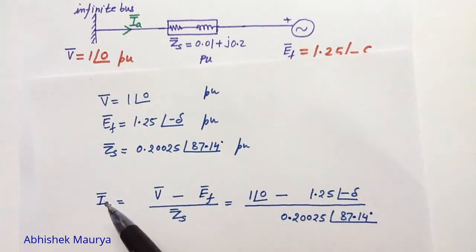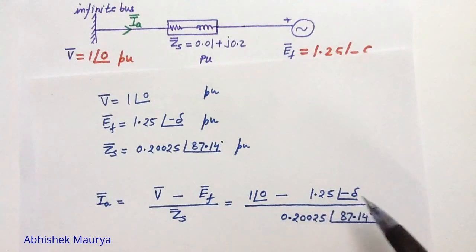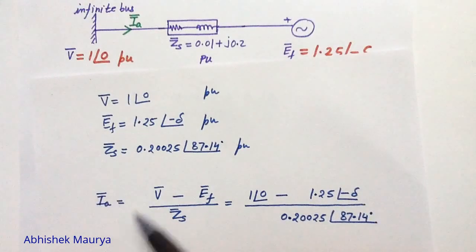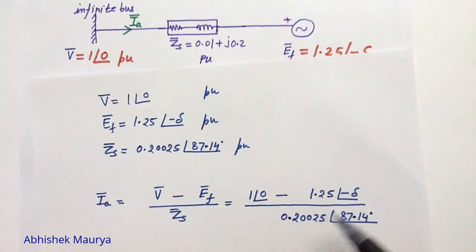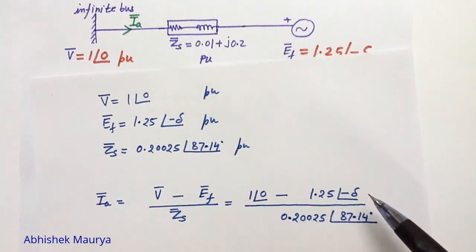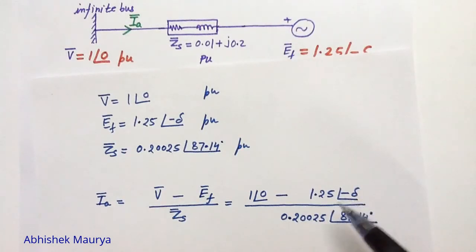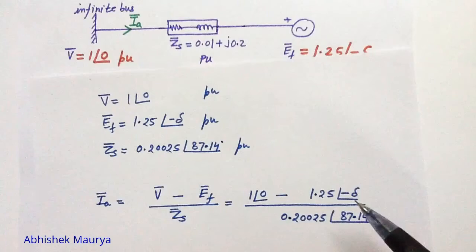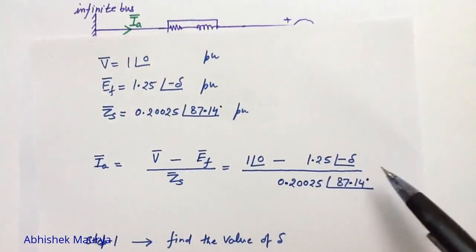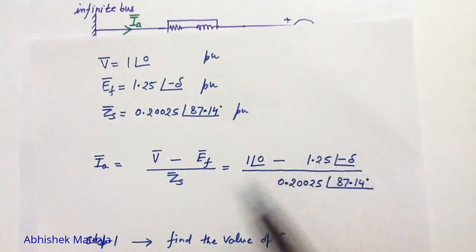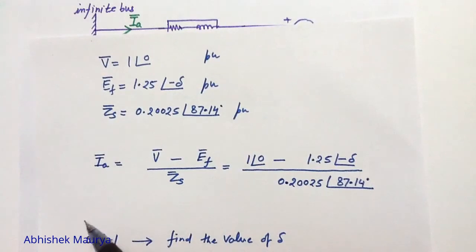So the information given to us is: we know the terminal voltage V, we know the excitation EMF magnitude of 1.25, we do not know the value of delta, and we know the synchronous impedance of the motor. We can write the equation to calculate the stator current as IA equals V minus EF divided by Zs. Putting all values: 1 angle 0 minus 1.25 angle minus delta, divided by 0.20025 angle 87.14 degrees. Our first step will be to find the value of delta. In the second step, we will put delta into this equation to get the stator current.